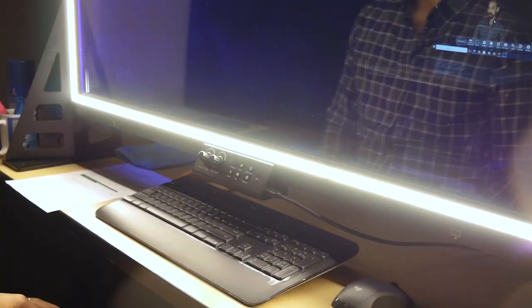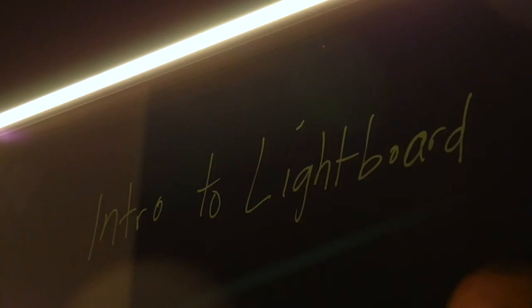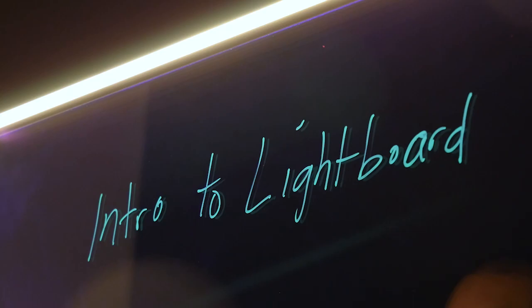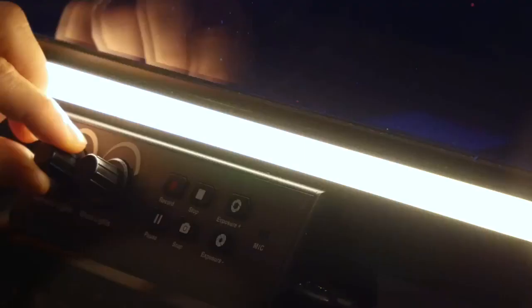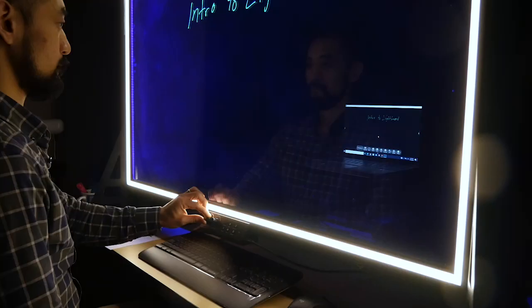Use the switches to turn on the instructor light and the class light. The class light illuminates the class with a backlight that will make the marker ink glow. The instructor light helps light you so that your audience can see you well.